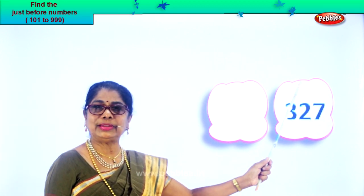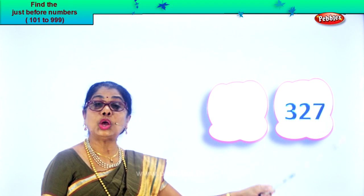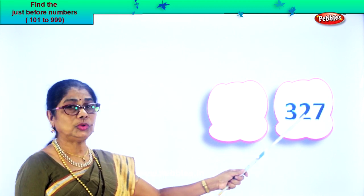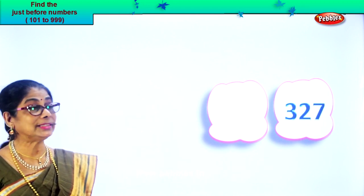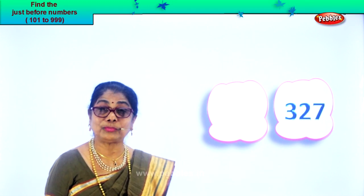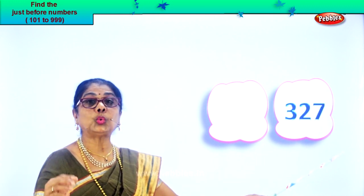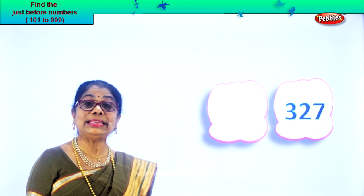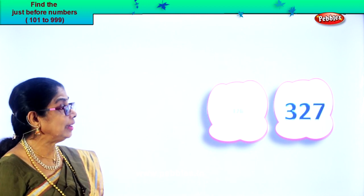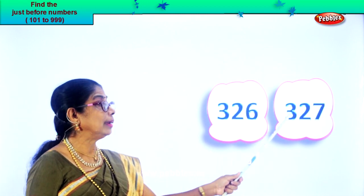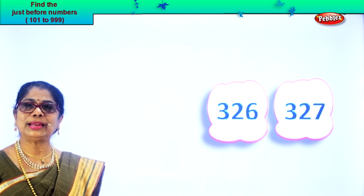Look — in the ones place you have seven, tens place two, and hundreds place three. Read: three hundred and twenty-seven. We are looking for the number just before. In the ones place you have seven — one less than seven is six. So twenty-seven becomes twenty-six. Three hundred and twenty-six is the number just before three hundred and twenty-seven. Three hundred and twenty-six, three hundred and twenty-seven.